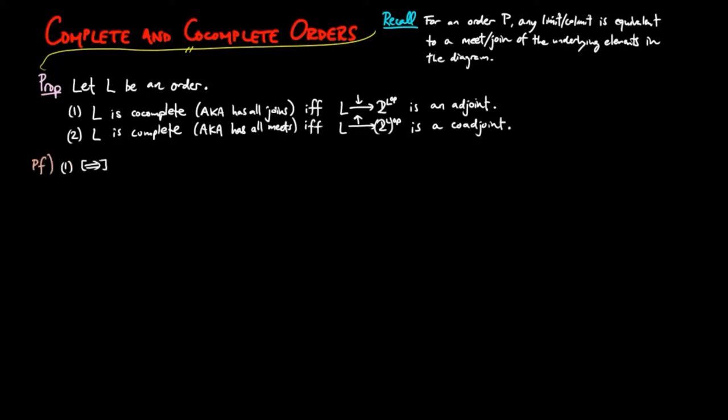For the proof of one in the forward direction, by the universal mapping property of joins, the join functor is an order morphism. We claim it is the left adjoint to the down segment functor.